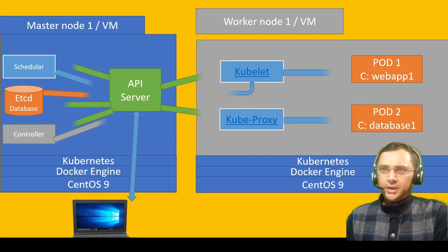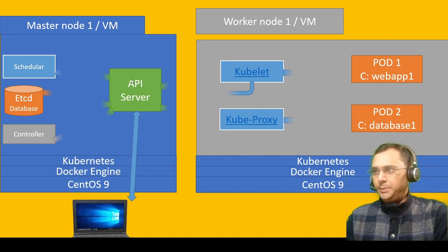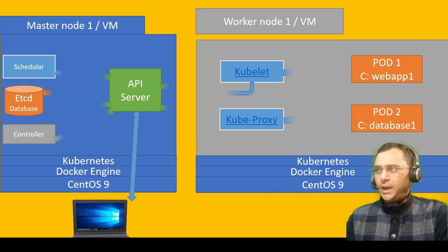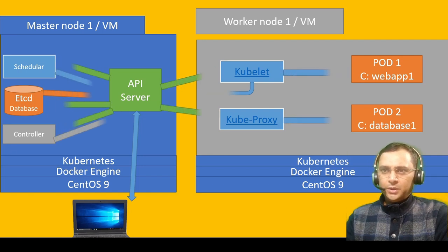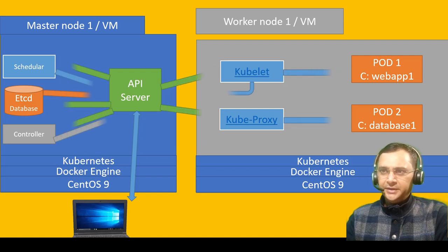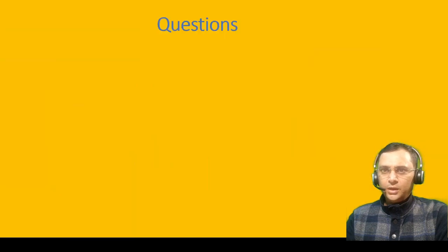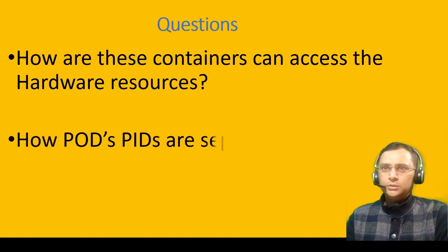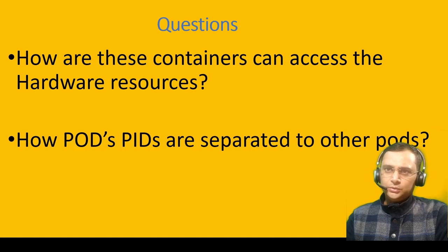As of now, we understand that there are eight components of a Kubernetes cluster: API server, scheduler, etcd database, and controller — these are the master components. However, kubelet, kube-proxy, pod, and CRI container runtime are the components of worker nodes. Theoretically that is fine, but how do these containers running inside a pod get hardware resources and separate process IDs and network IDs from other containers? These are the questions: how can these containers access hardware, and how are pod process IDs separated from other pods? Let me give you a hint.